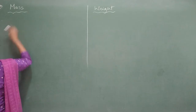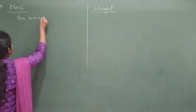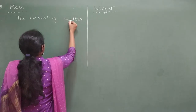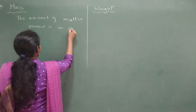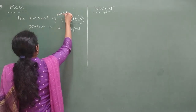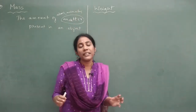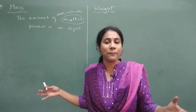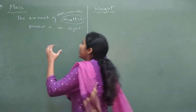So let me write the definition in a simple way so that you can understand: mass is the amount of matter present in an object. Here, matter means it can be atoms, molecules, compounds, or whatever — anything. Any object in this universe is made up of matter, that is atoms, molecules, elements, etc. So this amount that is there in a particular object is called as mass.